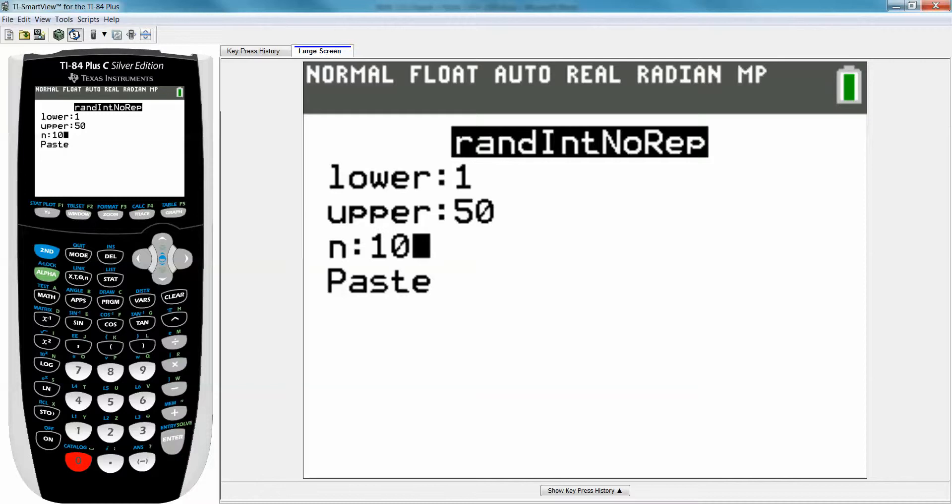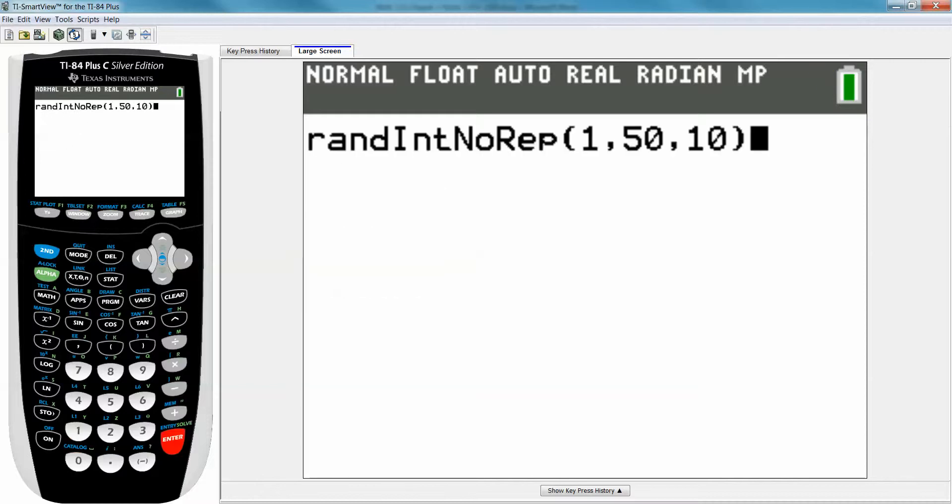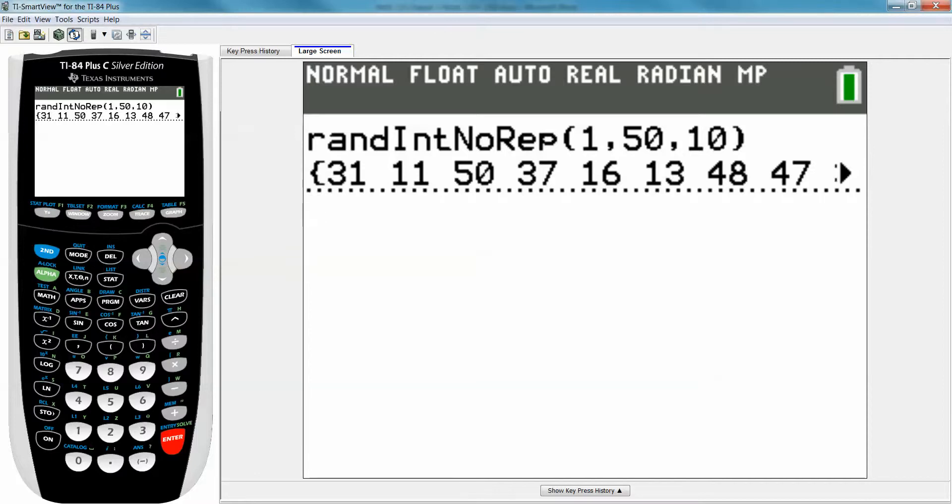So randintnorepeat means it's going to choose a random integer from 1 to 50. Remember from your algebra class, integers are the whole numbers. Right? So 1 to 50. I want 10. Go down to paste, enter. And again, this won't be available on old calculators. And there you go. And it will never have a repeat in there. So you don't have to do 12 or anything. It'll just automatically take it. So that's how to do randintnorepeat.